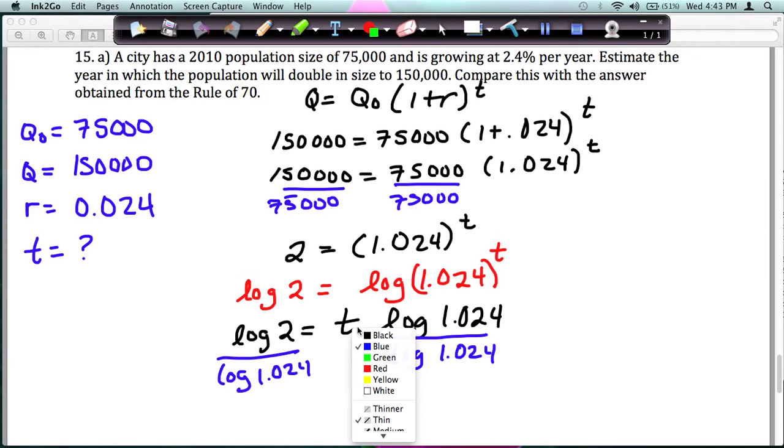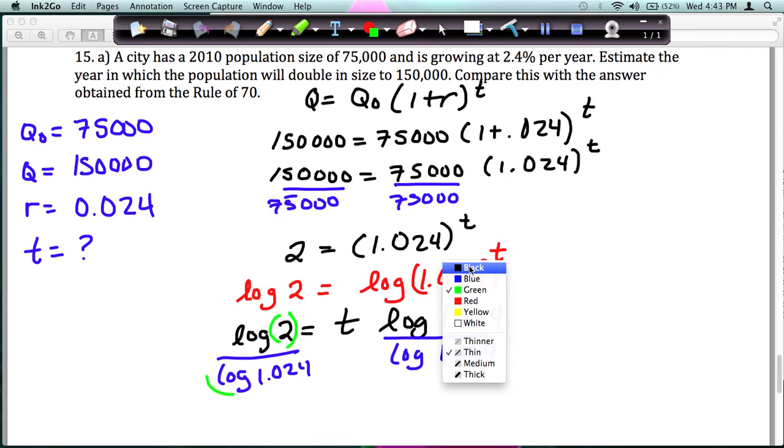Now the one thing you have to be careful about when you put this into your calculator is if your calculator gives you a parenthesis after log, make sure you end that parenthesis after the 2. Otherwise it will divide the 2 incorrectly. So end the parenthesis and then put in the log of 1.024. You should practice that on your calculator and make sure you get that T equals about 29.23 years.